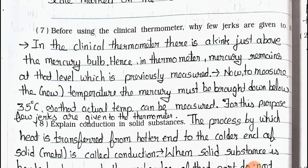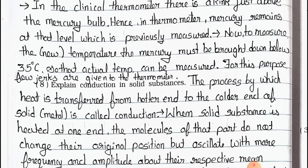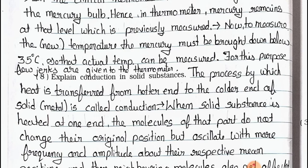Answer: In the clinical thermometer, there is a kink just above the mercury bulb. Hence, mercury remains at the level which was previously measured. To measure a new temperature, the mercury must be brought down below 35 degrees Celsius so that the actual temperature can be measured. For this purpose, a few jerks are given to the thermometer.